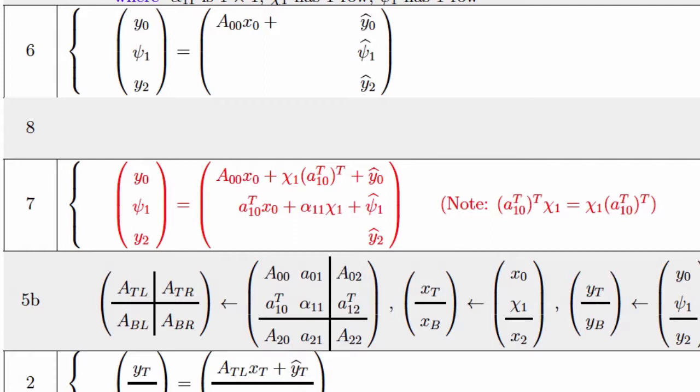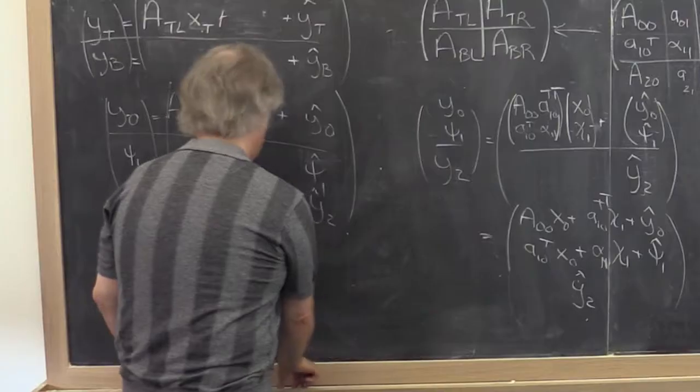And y two hat. Just a matter of working out what must be in the vector. What does the linear algebra tell us must be in the vector. So what we just did is derive step seven for the worksheet, the state of the variables after the update. And if we then plug that into the worksheet, this is what you get.